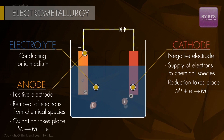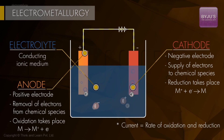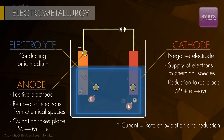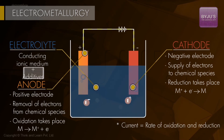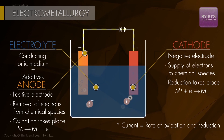In the electrolytic cell, circuit completion takes place indirectly through the electrolyte. Additives could be added into the electrolyte to create certain favorable conditions.